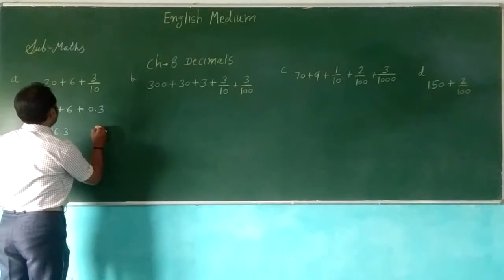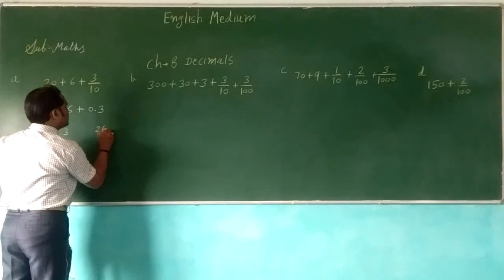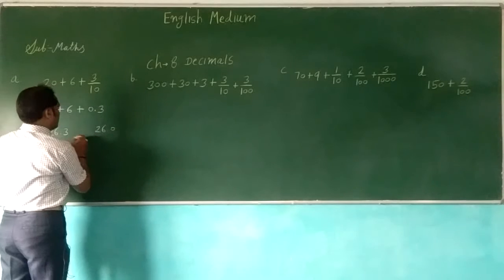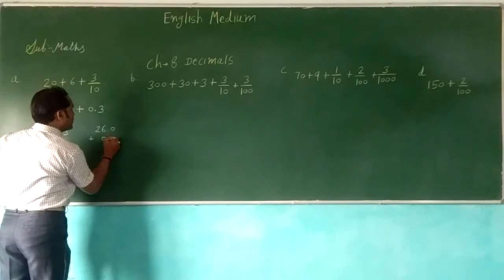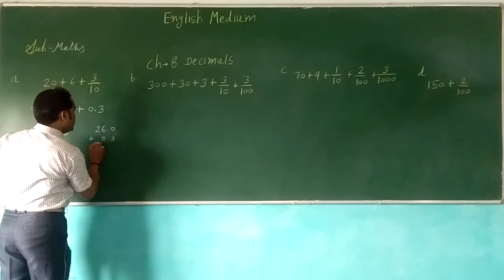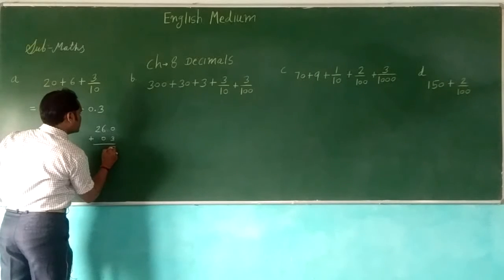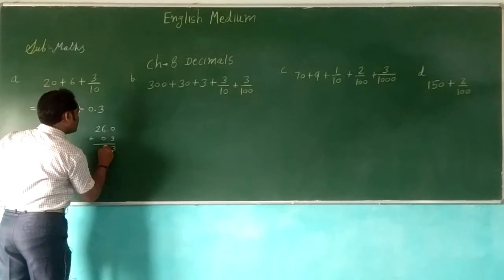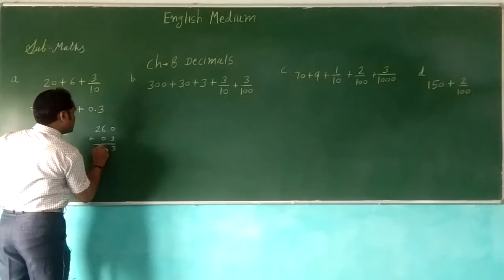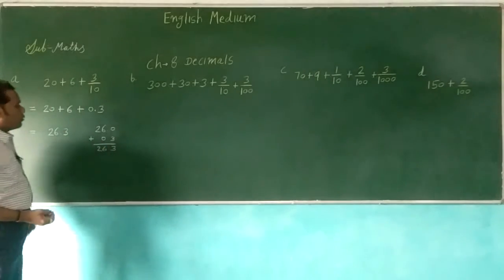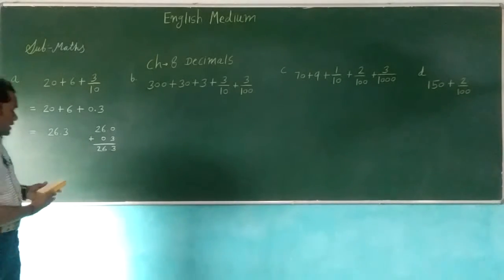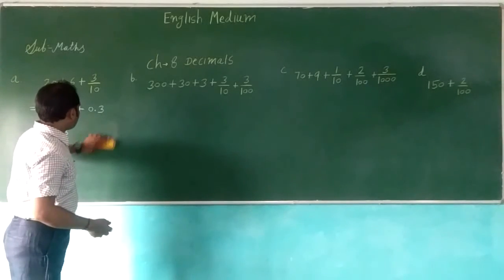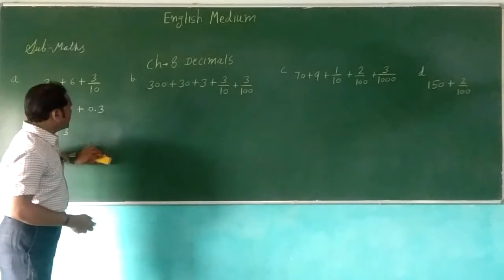Here we can add: 26.0 plus 0.3, then 3 is given, so the answer is 26.3. So this way we can add that sum.